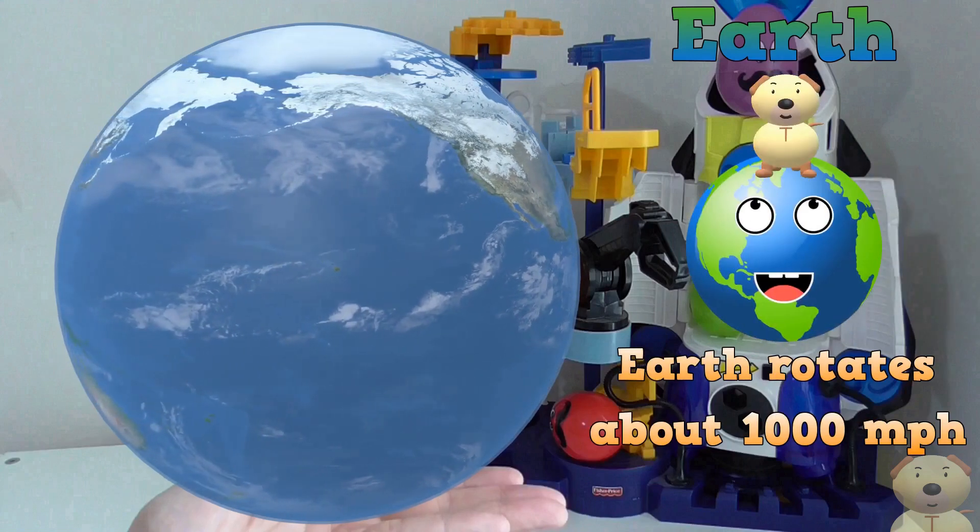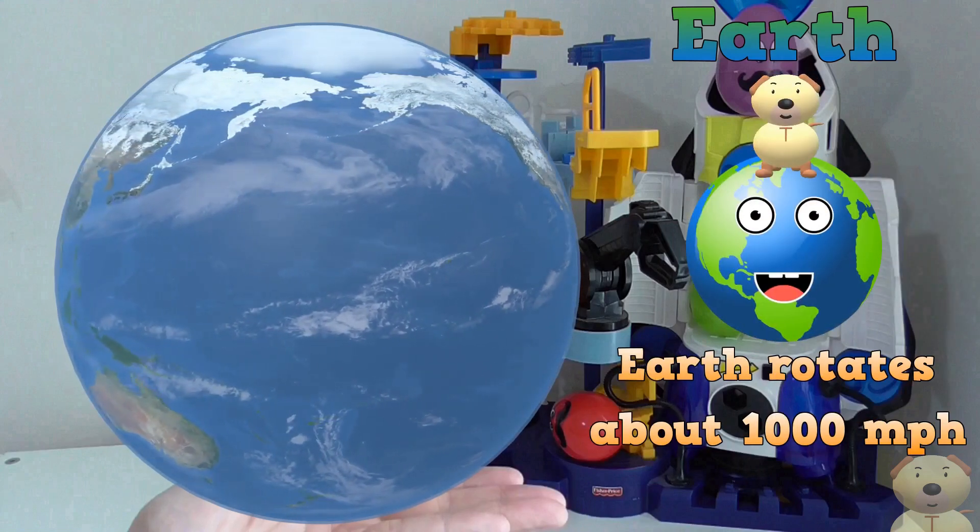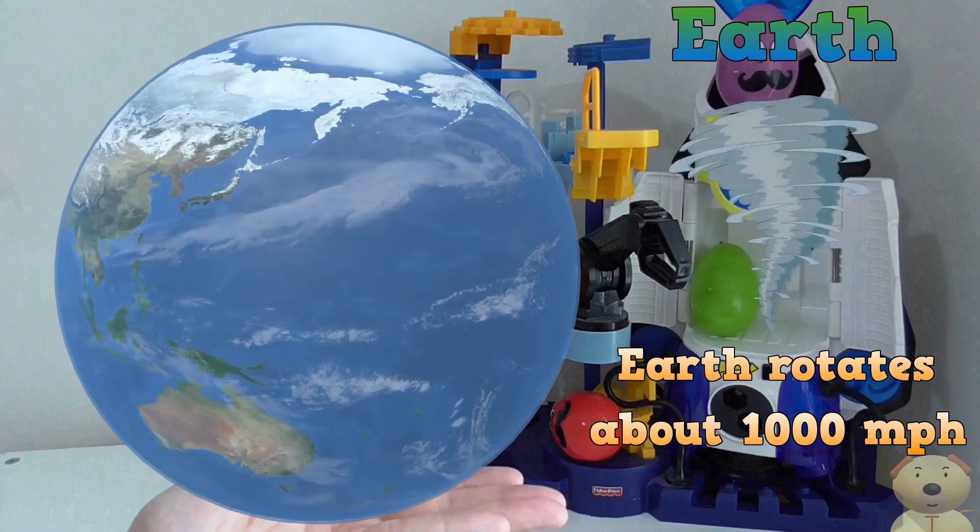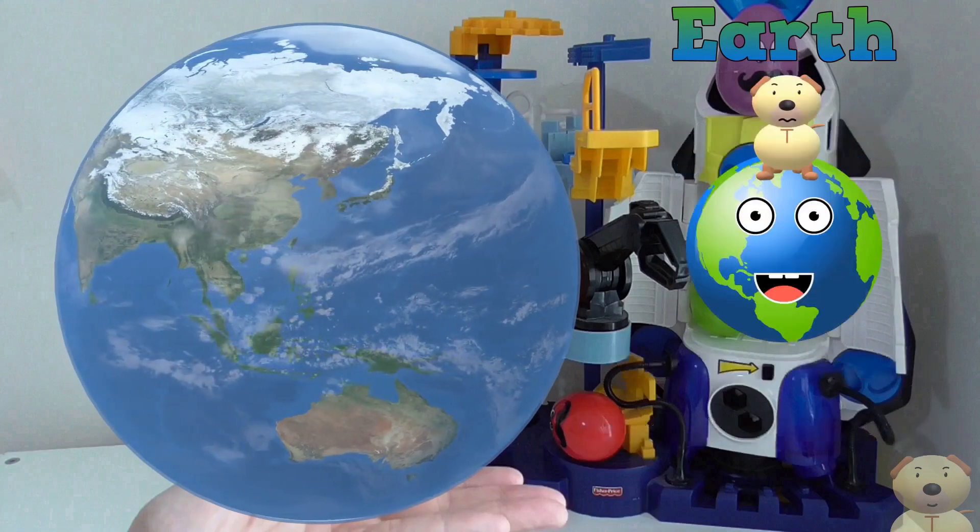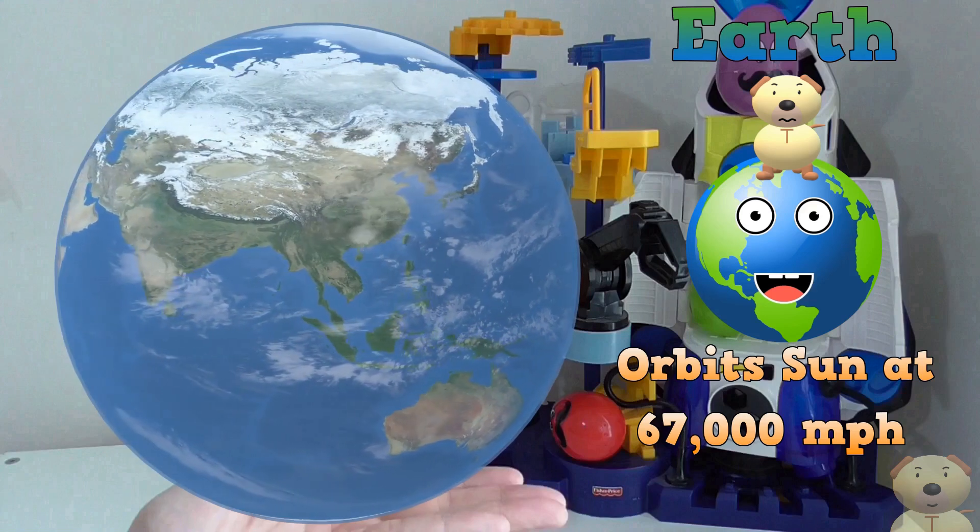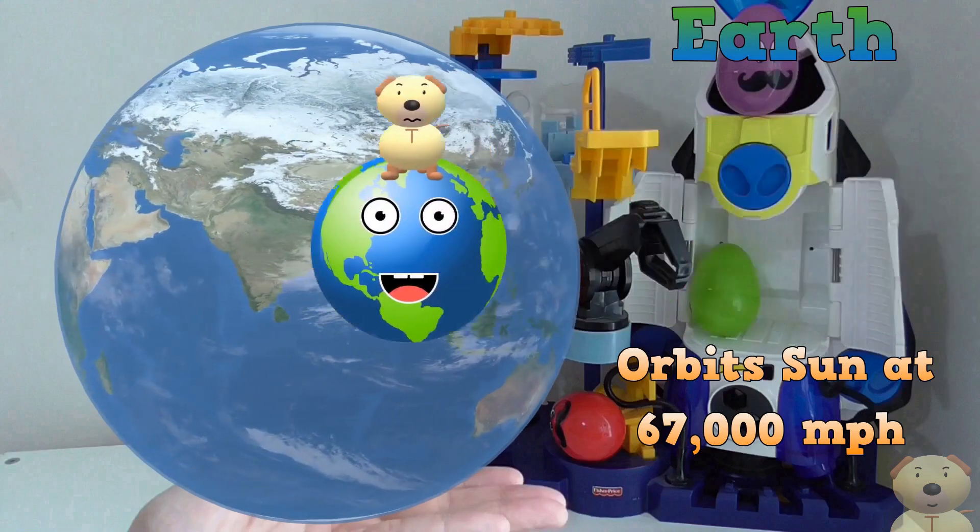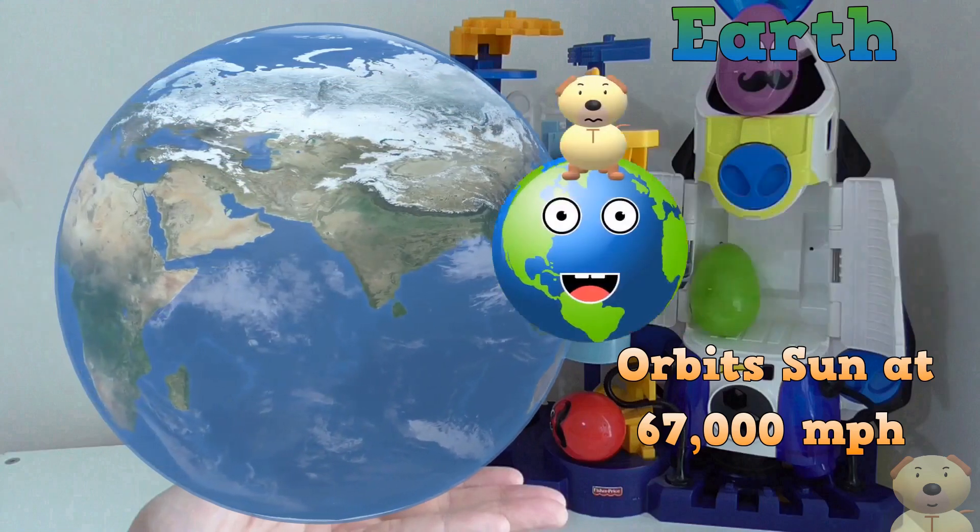You might be sat down, but you're still moving! The Earth is rotating at a speed of around a thousand miles an hour at the equator. As well as this, the Earth is also moving through the solar system at around 67,000 miles an hour!